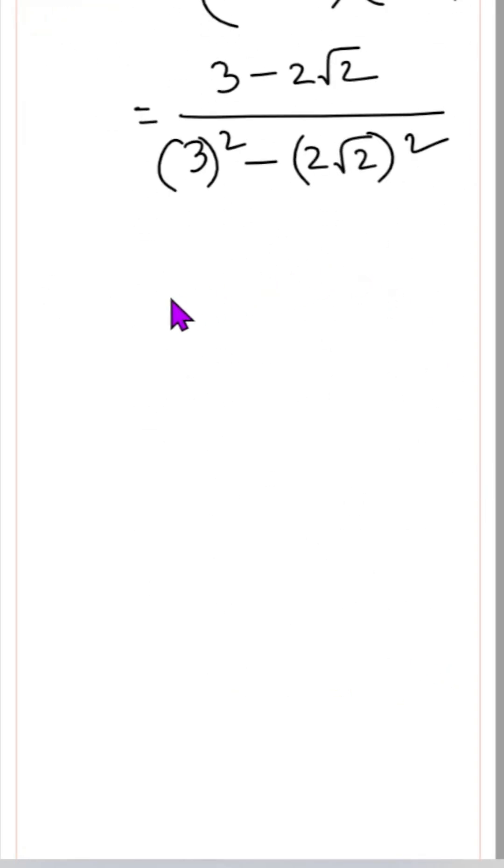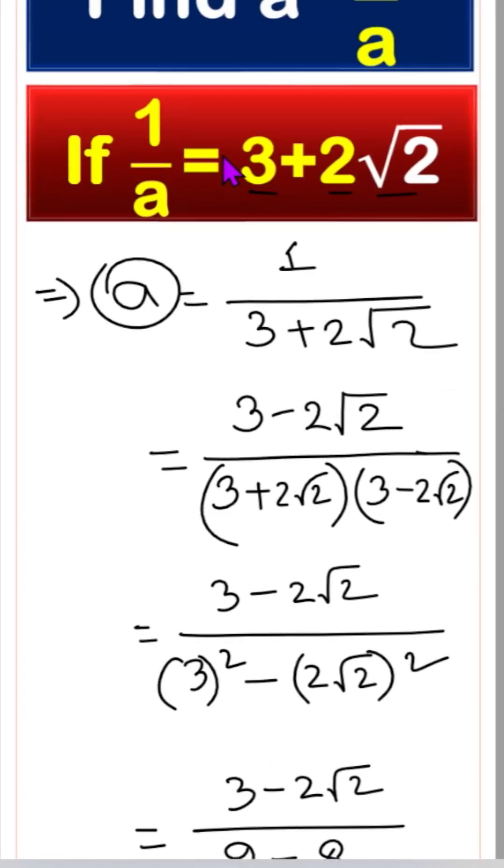Then here is 3 minus 2 root 2, and here is 3 squared means 9, and 2 root 2 squared means 8, because 2 squared means 4, root 2 squared means 2, so 4 times 2 is 8. So here is ultimately 3 minus 2 root 2. So here a is what?